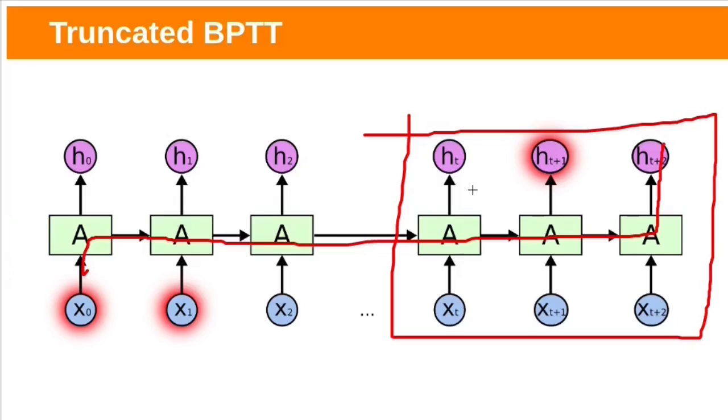By using truncated backpropagation through time, we can avoid vanishing and exploding gradient problem but we cannot capture long term dependencies. If we want to capture long term dependencies, we need to find this RNN till this end.